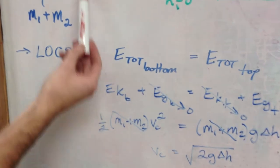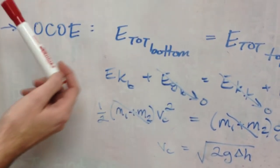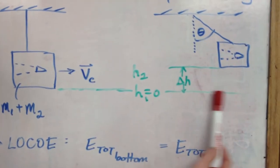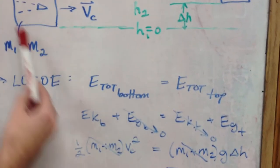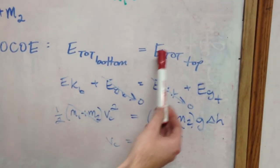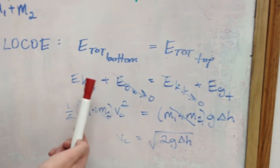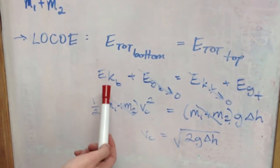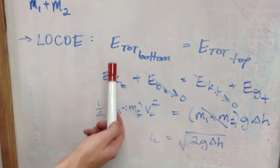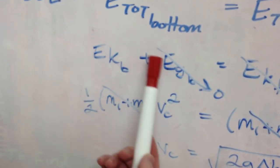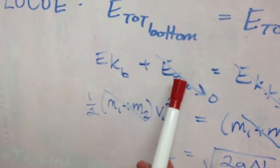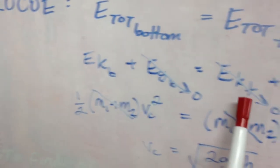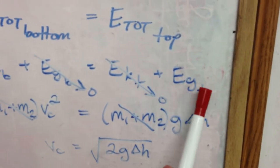So the total energy when the box was at the bottom, by bottom I mean with reference to an imaginary line here, whose height we're going to say is 0. So the total energy at the bottom should be equal to the total energy at the top. Total energy is equal to both the kinetic energy and the gravitational potential energy of the object.